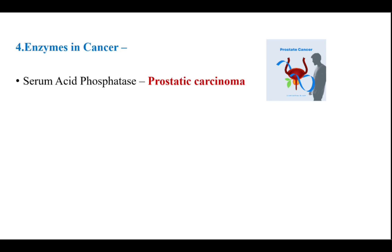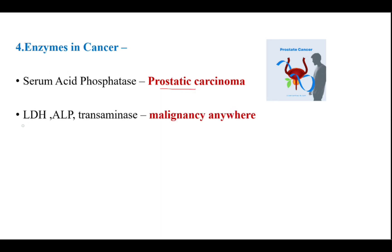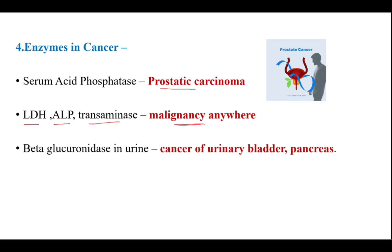Next, enzymes in cancer: serum acid phosphatase is raised in prostatic carcinoma. Lactate dehydrogenase, alkaline phosphatase, and transaminases are raised in any malignancy. Beta-glucuronidase in urine is seen in cancer of the urinary bladder and pancreas.